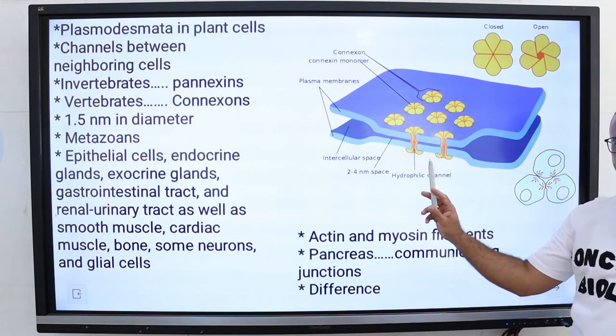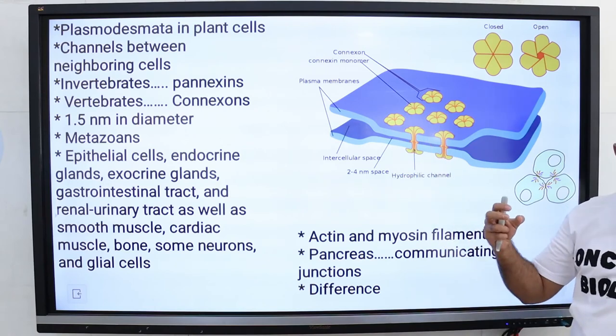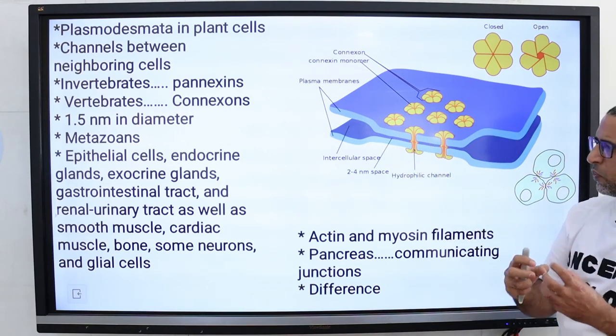Gap junctions not only connect the plasma membranes, but also contain channels that connect the cytoplasm of adjacent cells.